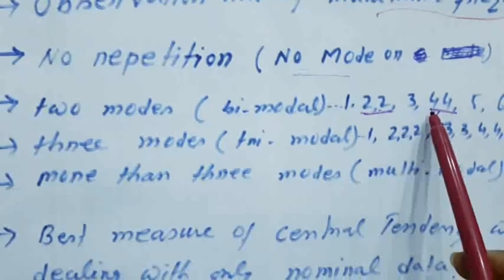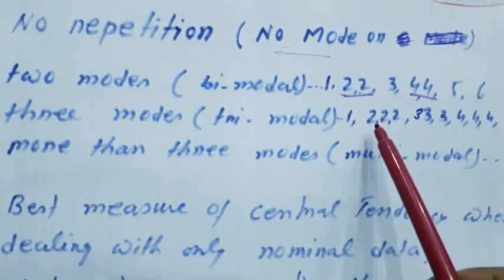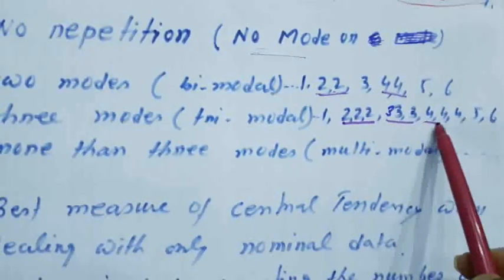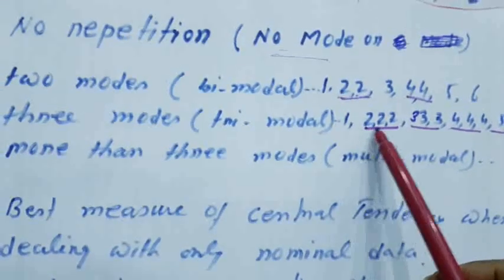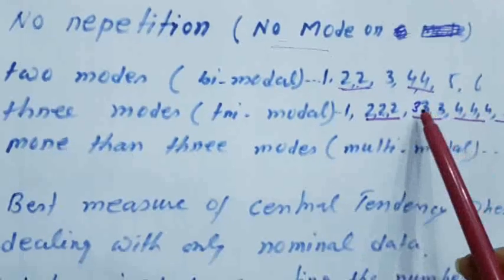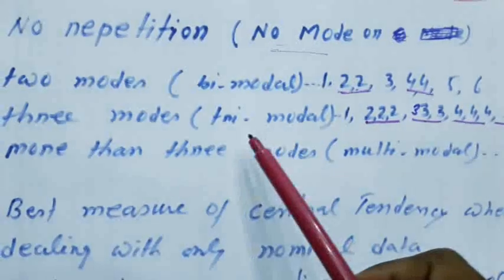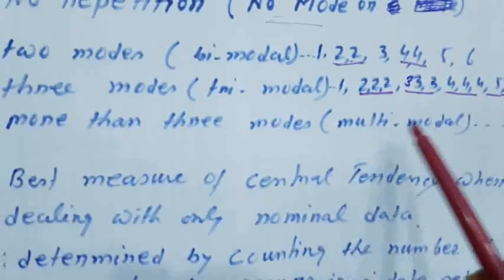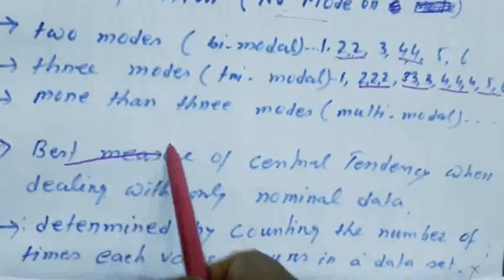On the other hand, if the observation is like 1, 2, 2, 2, 3, 3, 3, 4, 4, 4, 5, 6 — here 2 occurs three times, 3 occurs three times, and 4 also occurs three times, while 1, 5, and 6 occur only one time. So the maximum frequency is for observations 2, 3, and 4, all having the same frequency of 3. Here you will get three modes — it is called a tri-modal data set. If we get more than three modes, it is called multi-modal.